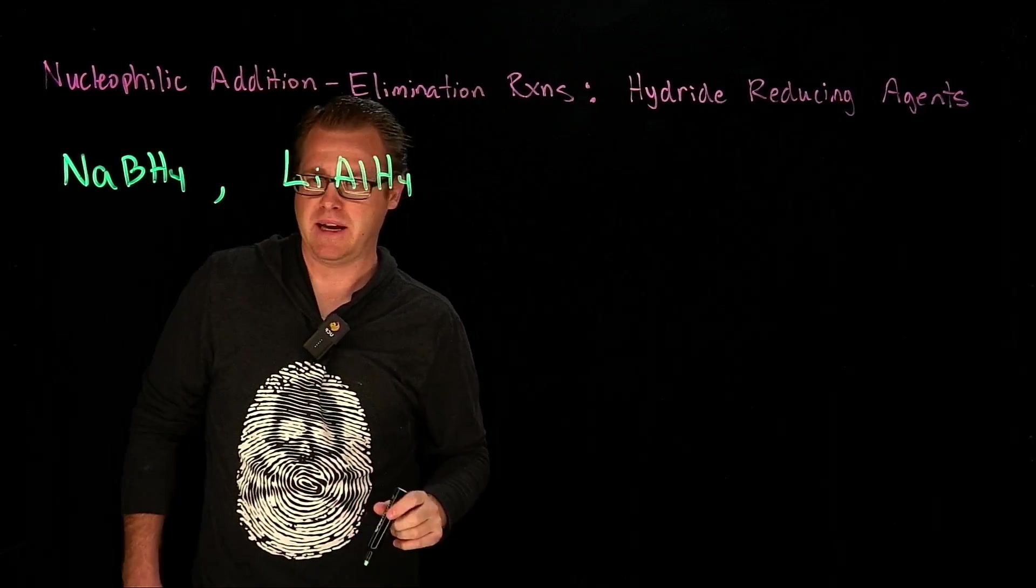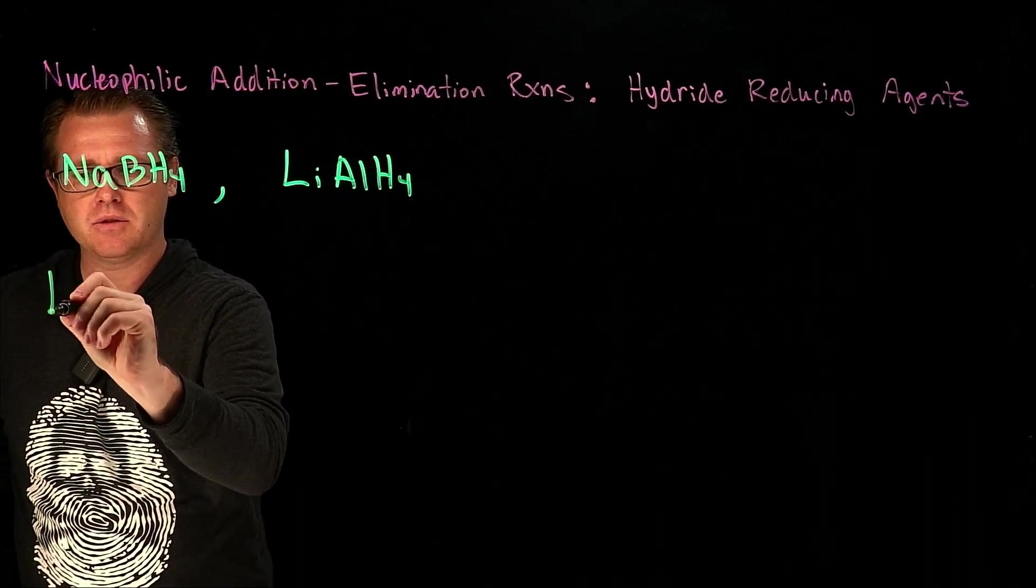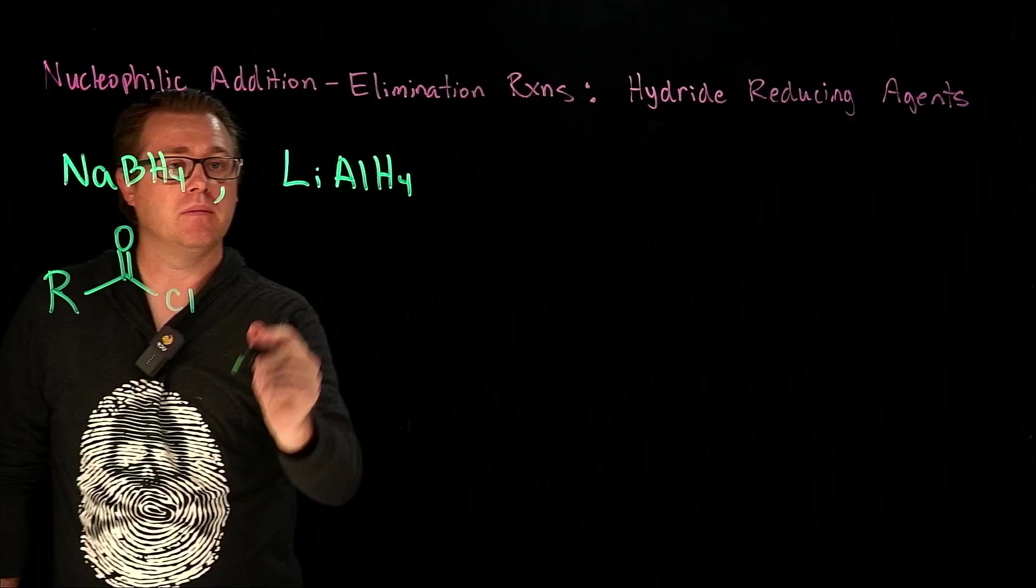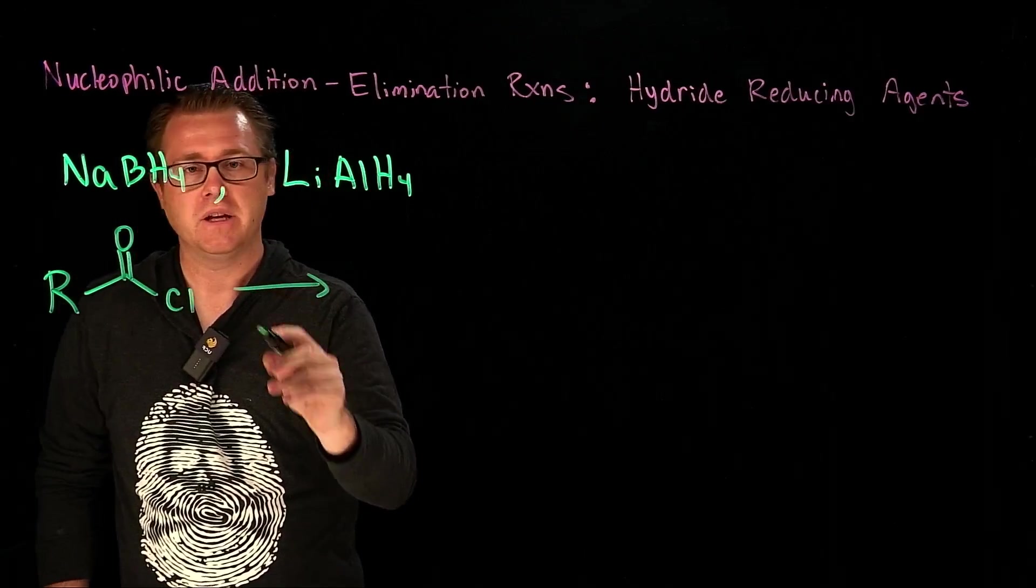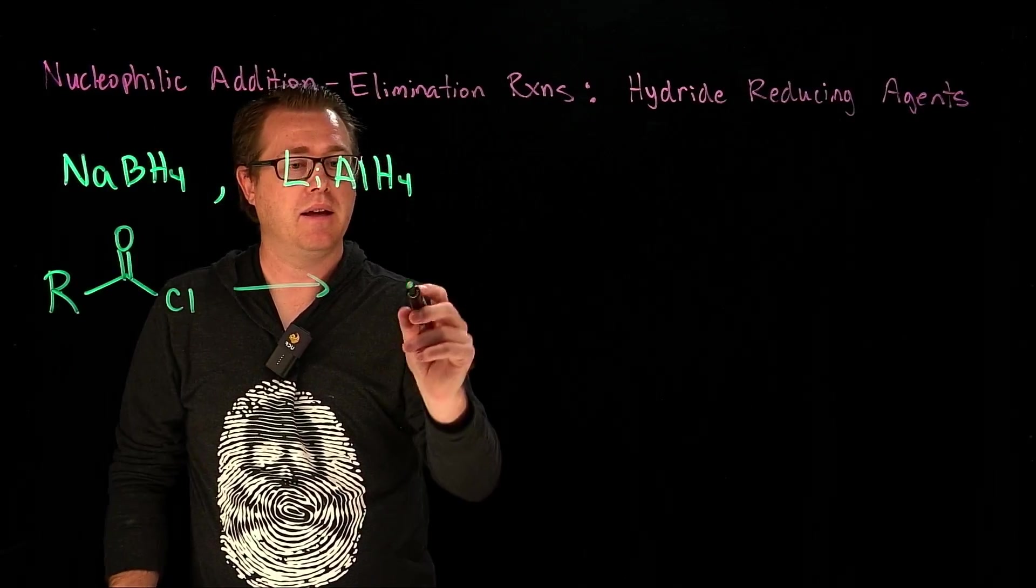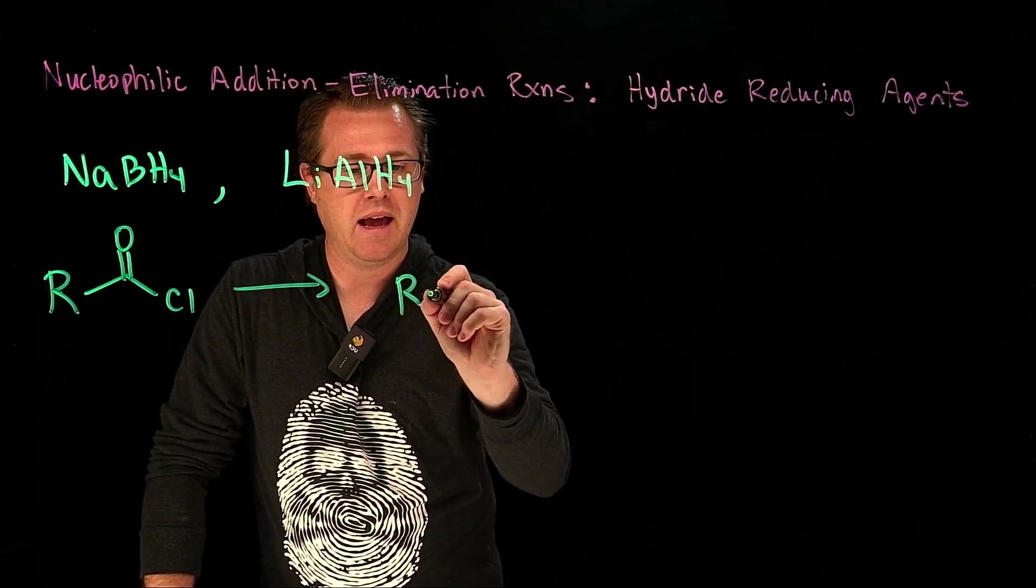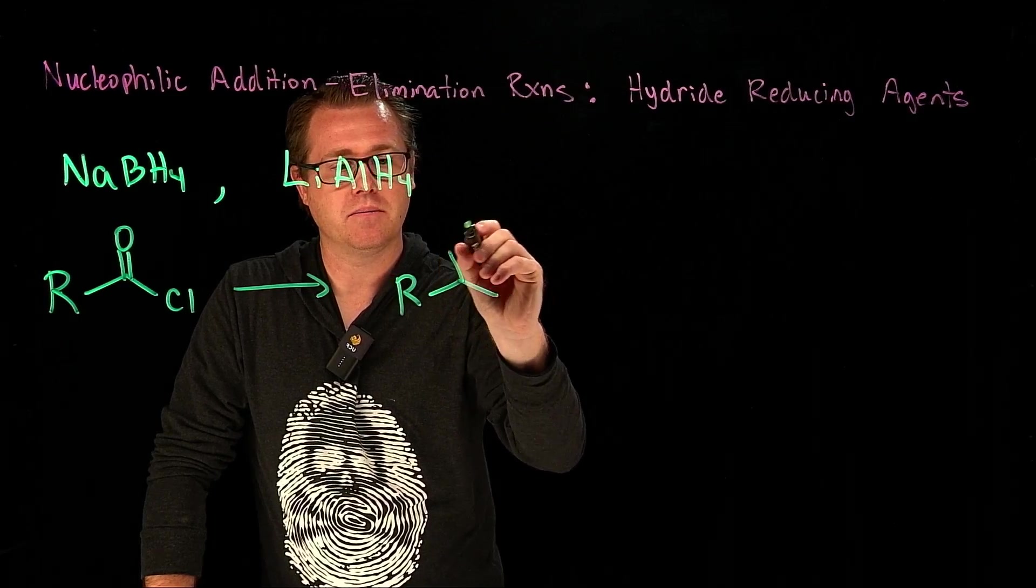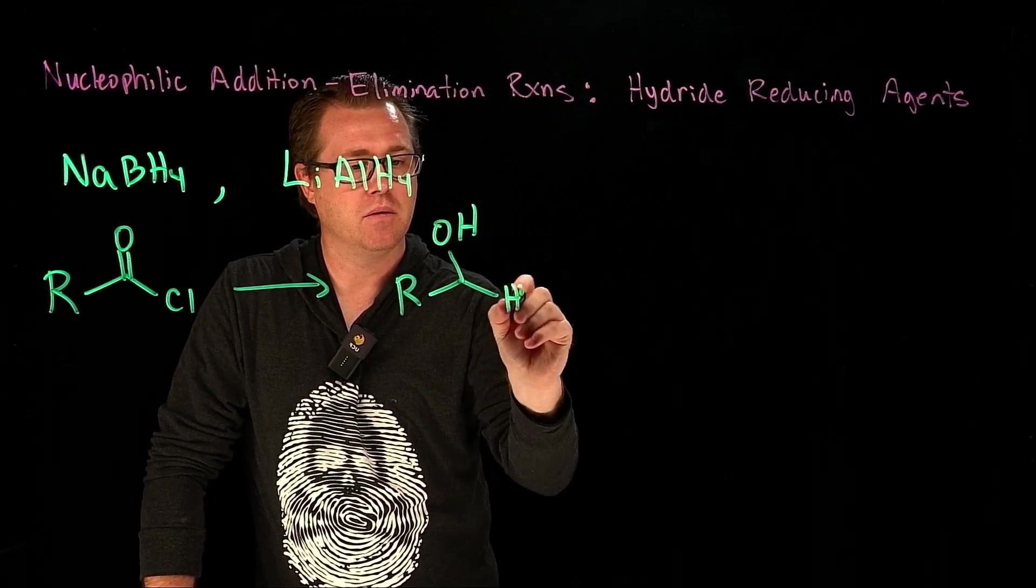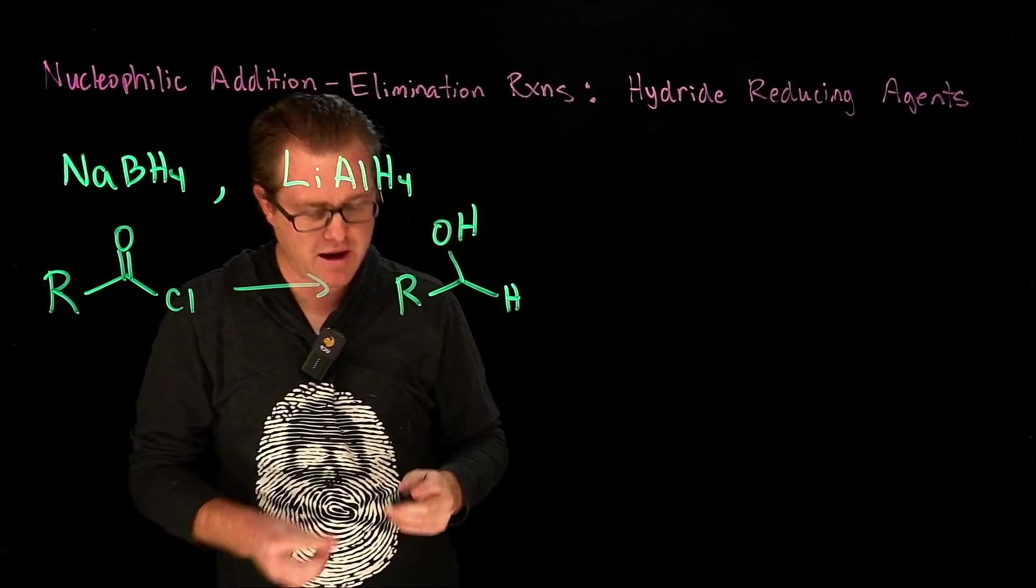What these reagents do is when you treat them with, let's say, an acid chloride, you treat it with either one of these reagents, what you're going to get is an alcohol. We'll get a primary alcohol.